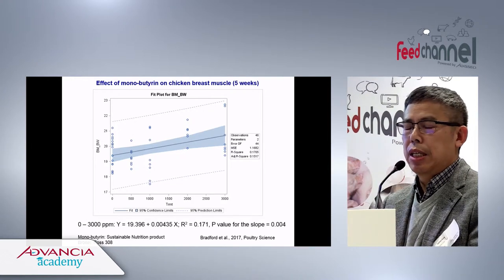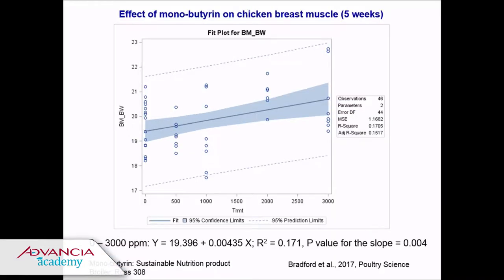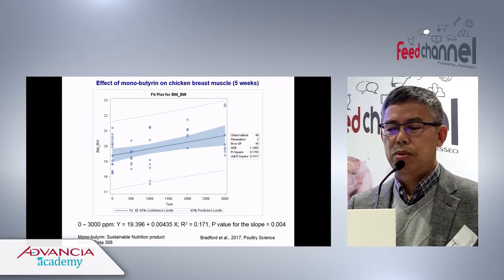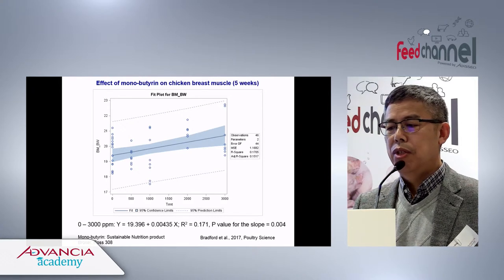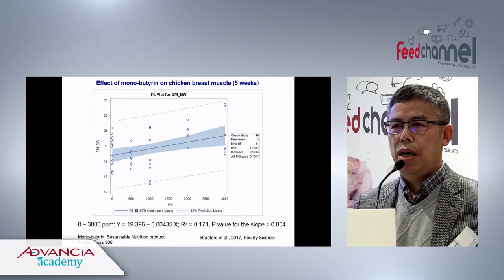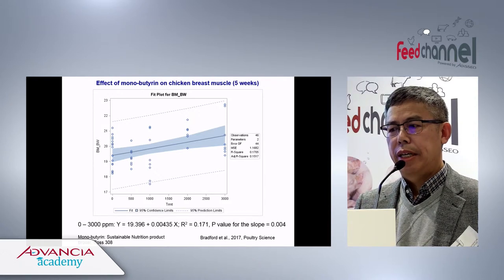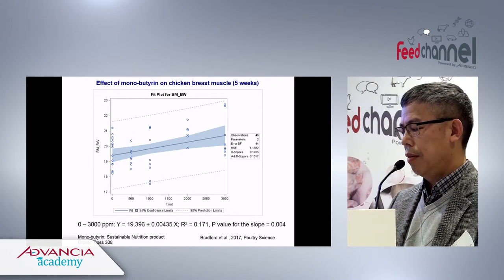We also checked the effect of monobutyrin on chicken performance and observed a similar phenomenon. However, in the tributyrin-treated chickens we didn't see an effect on breast muscle, but in those treated with monobutyrin we saw a slight enhancement of breast muscle weight.